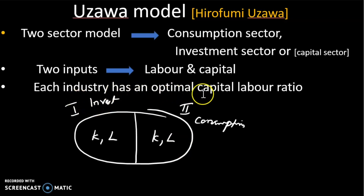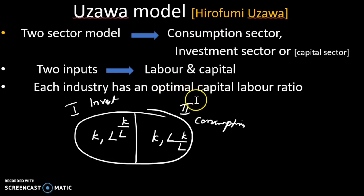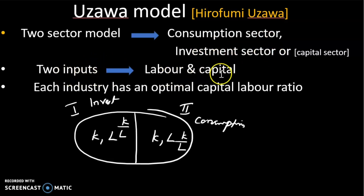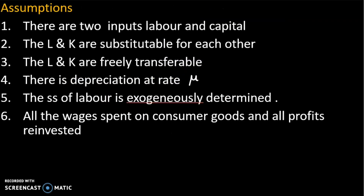Each industry has an optimal capital-labour ratio. The investment sector has one capital-labor ratio and the consumption sector has one capital-labor ratio. That is optimal, and profit is maximized by the use of capital and labor. These are the main points of the model.